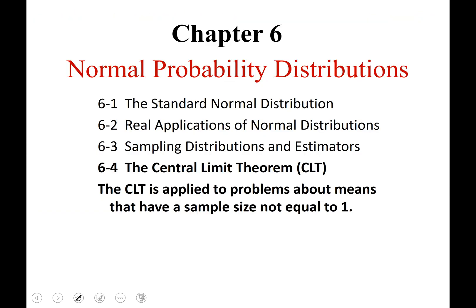Okay section 6.4 is on the central limit theorem or CLT. The CLT is applied to problems about means that have a sample size not equal to 1. And I just want to note for you that the square root of 1 is equal to 1 so I'll point out why I'm bringing that up later.